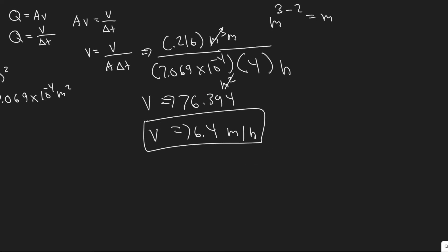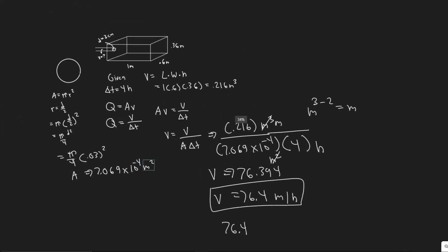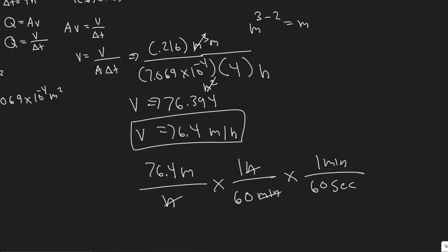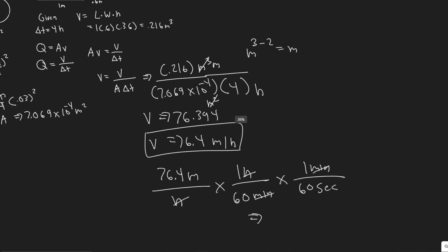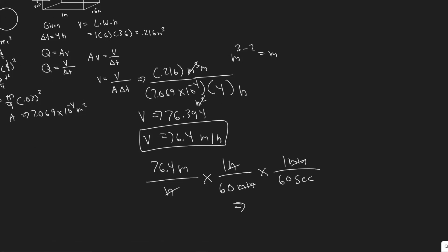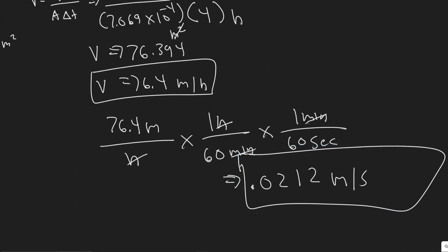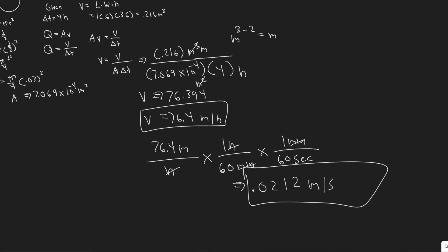I'm actually going to convert this to make it easier to understand, because meters per hour is kind of hard to picture — meters per second is easier. We have 76.4 meters per hour. One hour equals 60 minutes, and one minute equals 60 seconds. So dividing by 60 and then by 60, you get 0.0212 meters per second. That's an extremely slow flow rate — it would take about 50 seconds to travel one meter. You can write it either way, but those are your answers.